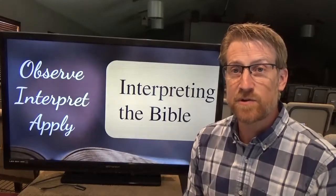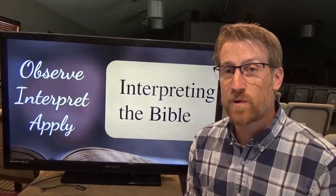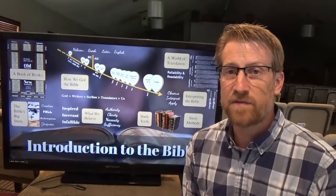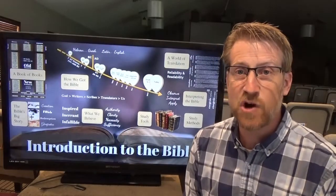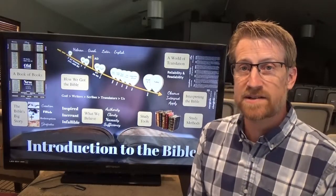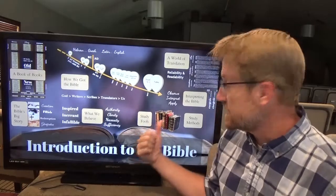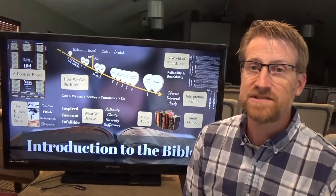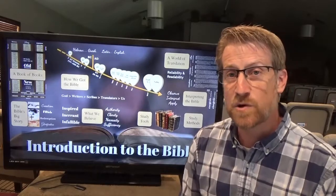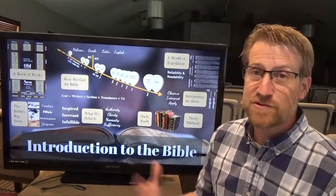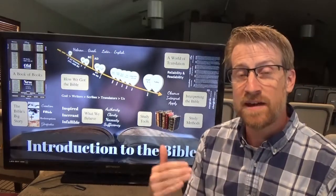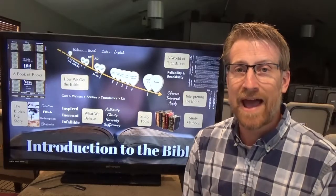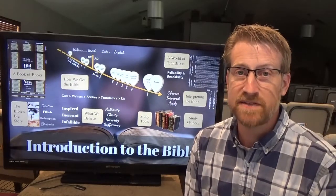The overarching idea of interpreting Scripture is just three steps: observe, interpret, and apply. We want to read out of Scripture, not into Scripture. We want to do exegesis, not eisegesis. I encourage you to come back for session seven as we begin to talk about the more practical aspects of Bible study and some study tools. In the last session, we'll talk about study methods. Keep in mind that interpreting Scripture means observing, interpreting, and applying. Hope to see you then.